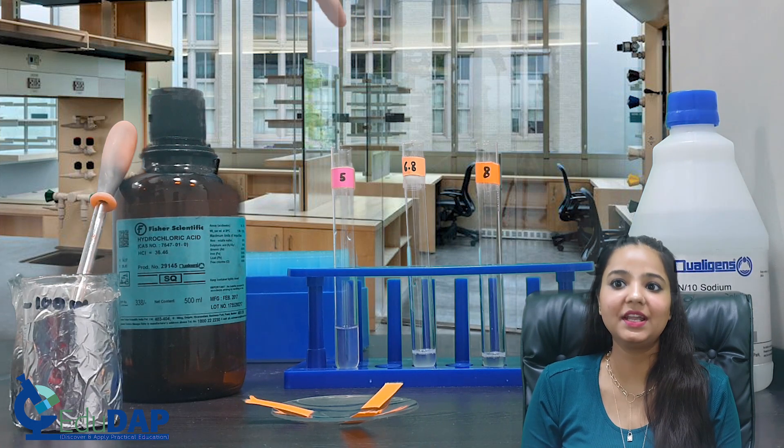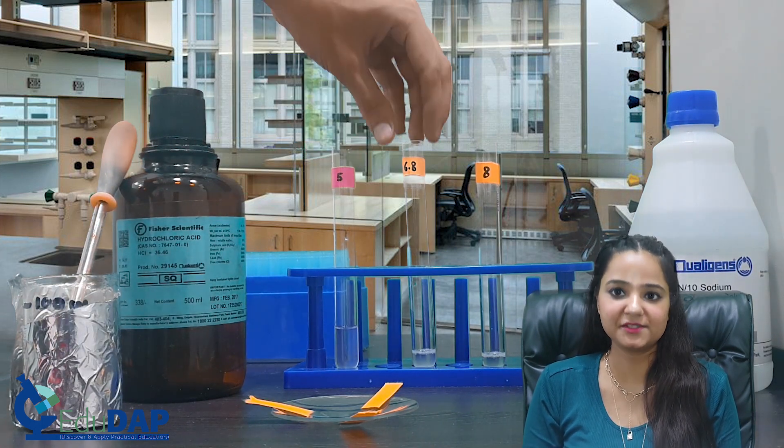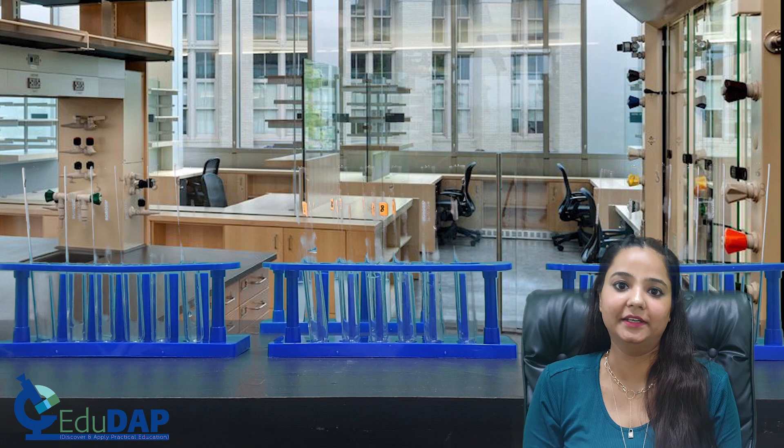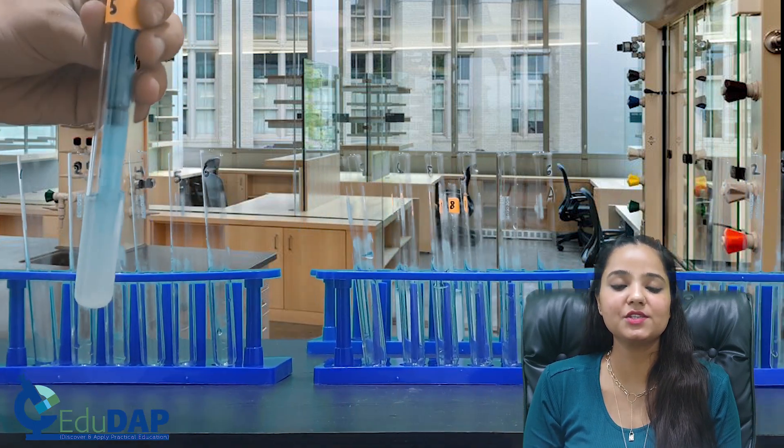Let's prepare the samples like earlier at different pH levels: 5, 6.8, and 8. Distribute the samples in a series of 6 test tubes.